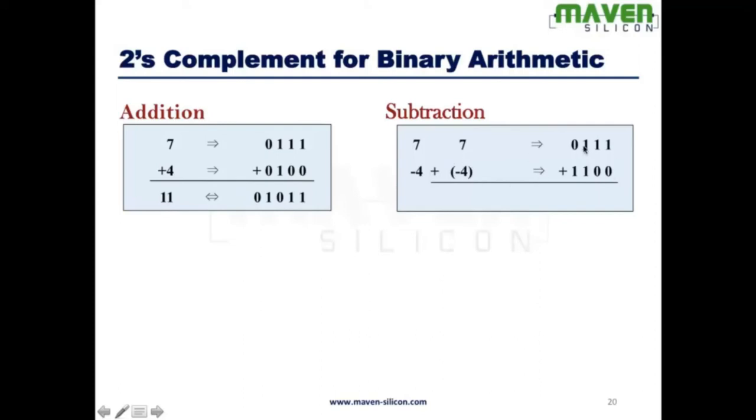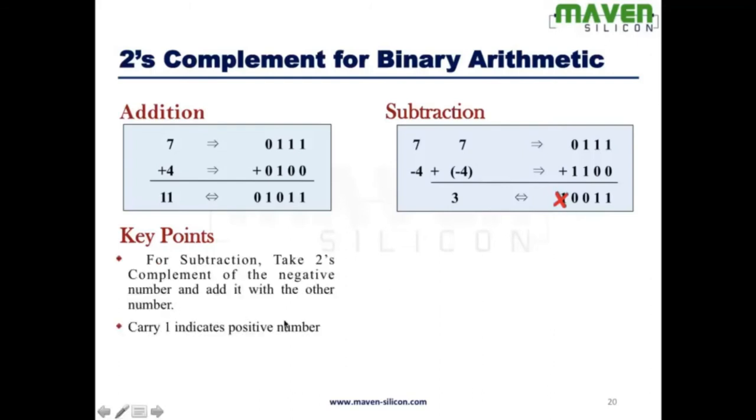So here, for 7: 0111. For minus 4: 1100. And then you need to add the value. You get 10011. When you get carry, what it means is the result is positive number. So you ignore the carry. Carry 1 indicates positive number. And carry 0 indicates negative number.